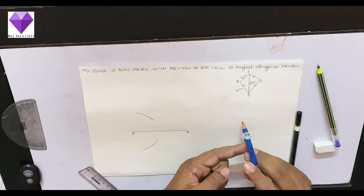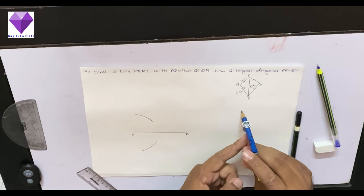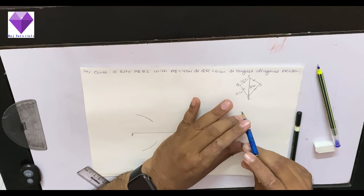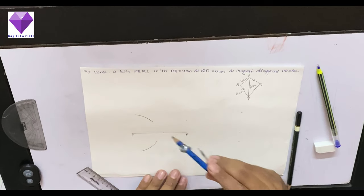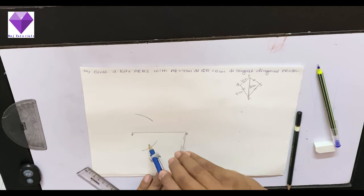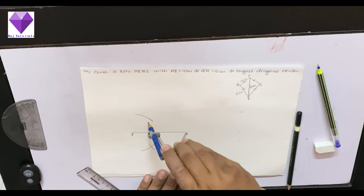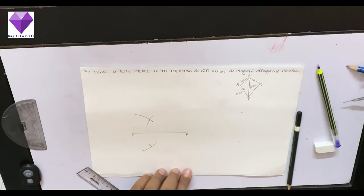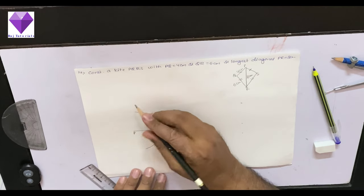So now 6 cm with R as center I will cut these 2 arcs wherever they cut and that point will be my Q and S points.